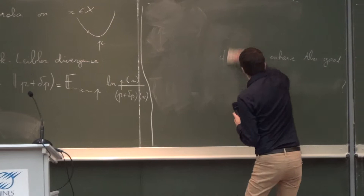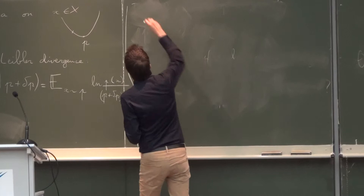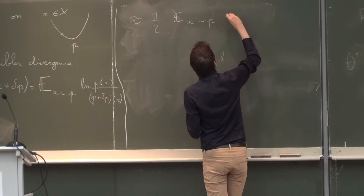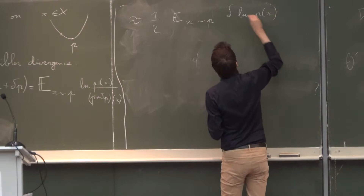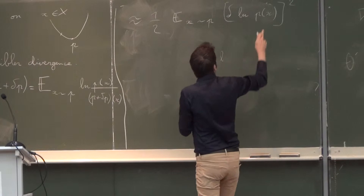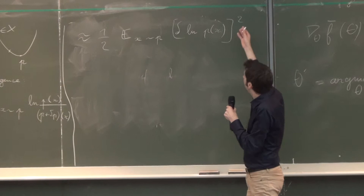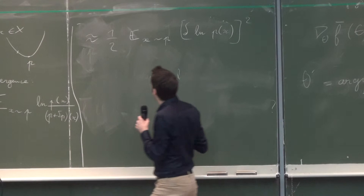If you expand this to second order, you get approximately one half times the expectation for x of p(x) times the squared variation of log p(x). Moving from p to p + delta_p means the variation of log p(x) is the variation of p(x) divided by p(x). You square this and take the expectation for x following the law p, and this gives you the second-order expansion of the Kullback-Leibler divergence.